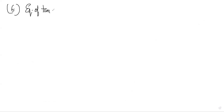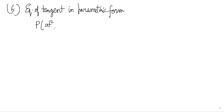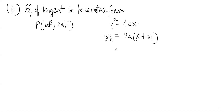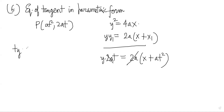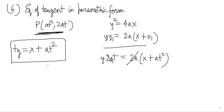The equation of the tangent to y² = 4ax in parametric form at point (at², 2at): using yy₁ = 2a(x+x₁) with x₁ = at², y₁ = 2at and simplifying, we get ty = x + at². This is a very important equation to remember.